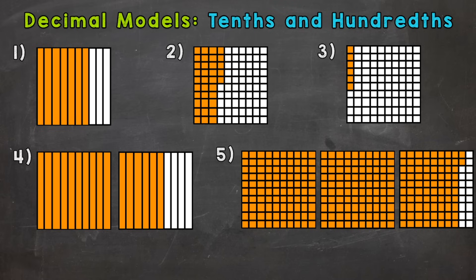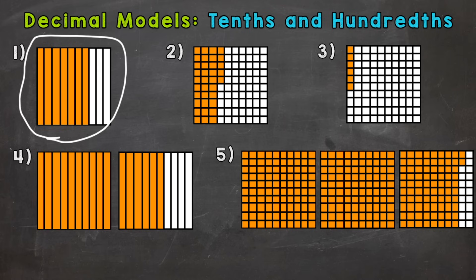Let's jump into number one, where we have one big full square. Now, if that whole square was filled in, that would represent one whole. But we don't have the full square filled in. For number one, that square is cut into ten equal pieces, so we're going to be working with tenths. Each one of those pieces equals one tenth. Let's see how many tenths number one represents: one, two, three, four, five, six, seven tenths.